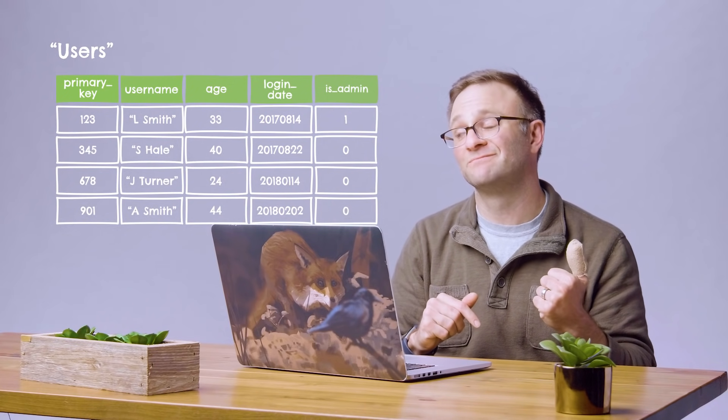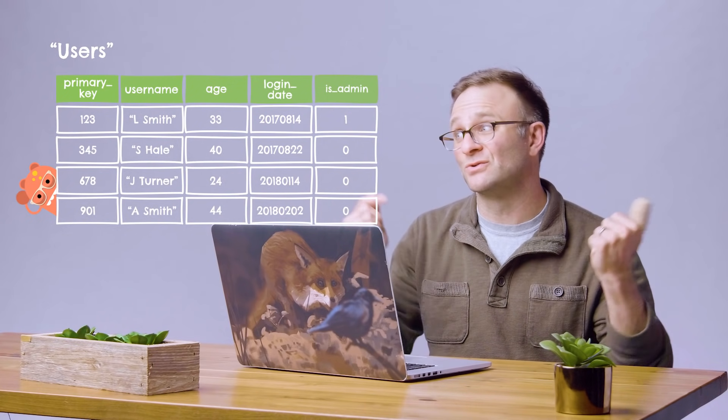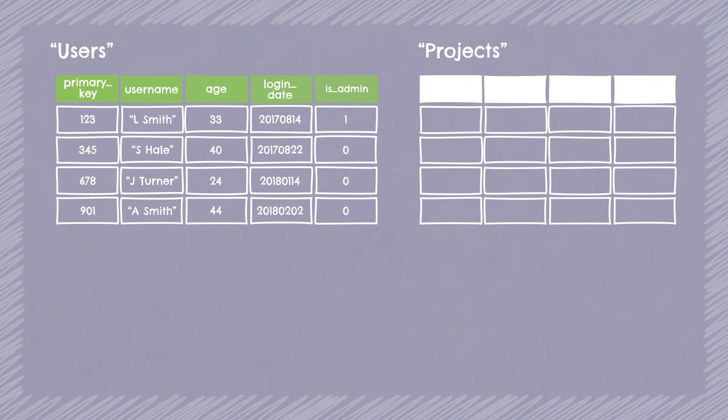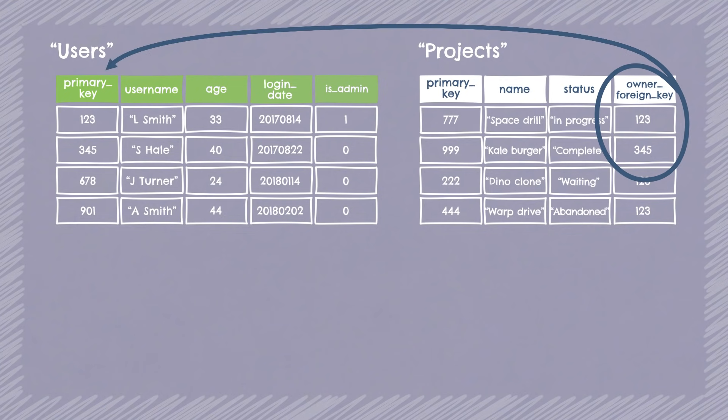Your age has to be an integer. Those are the rules. Because of this very strict schema, you usually end up storing one type of object per table in your database. And if you want to associate one object with another object in another table, you're usually doing that by creating another column known as a foreign key that contains the unique ID of that other entry in that other table.